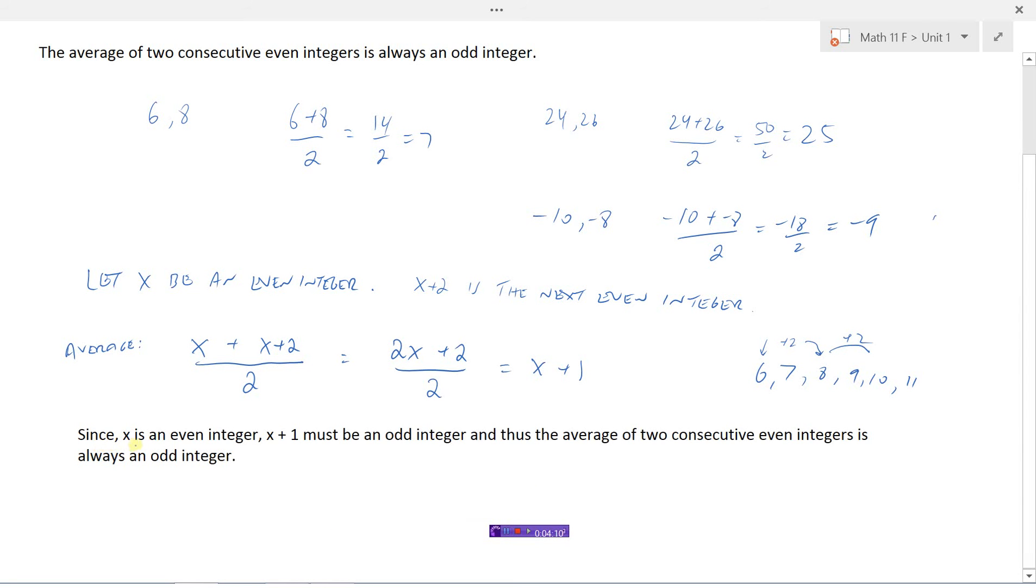So I can conclude that since x is an even integer, x plus 1, what we ended up here, x plus 1, must be an odd integer. And thus, the average of 2 consecutive even integers is always an odd integer. In other words, we have proved that this is always true.